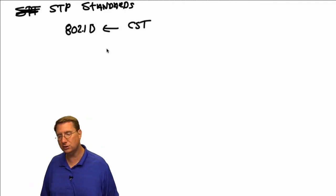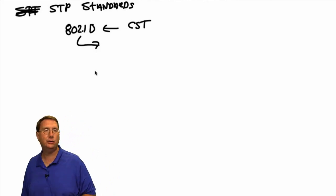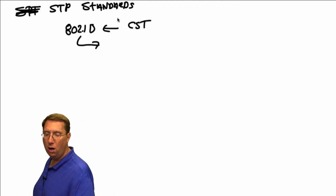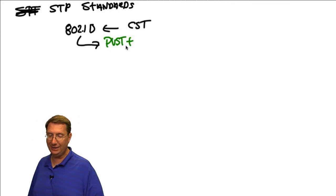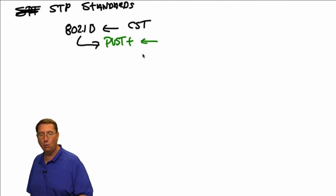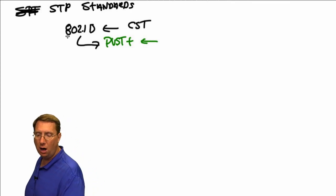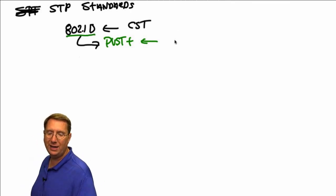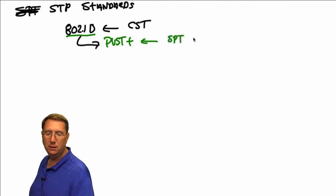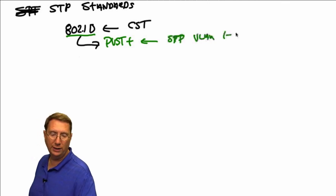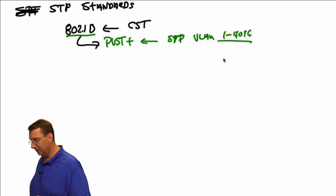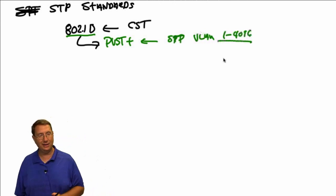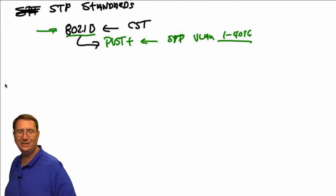What Cisco did is they took the idea of 802.1D and created their own proprietary protocol referred to as PVST+. Per VLAN Spanning Tree Plus is Cisco proprietary, and what it does is modify the 802.1D behavior so that now I support an instance of spanning tree for every VLAN — up to 4096 VLANs. And 802.1D was also very, very slow.